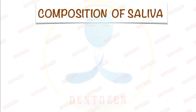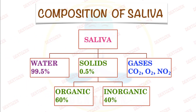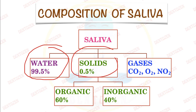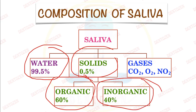Now let's come to the main part — what is saliva made of? Saliva is maximum water: 99 to 99.5% is water, and the rest 0.5 to 1% are solids. These solids can be two types: organic, which are mainly proteins at 60%, and inorganic, which are mainly ions at 40%.